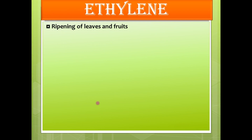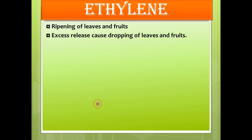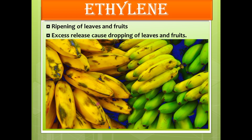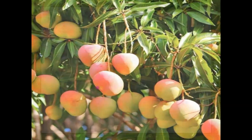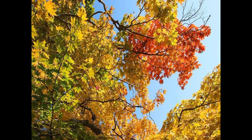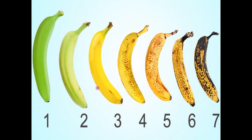The next one is ethylene. Ethylene helps in the ripening of leaves as well as fruits. Excess ethylene causes dropping of leaves and fruits. Here you can see the change in color when the fruit ripens — initially it is green in color, slowly it turns yellow, and when fully ripened it becomes pure yellow. Here also you can see the various stages of ripening of a fruit.